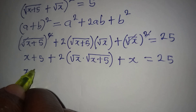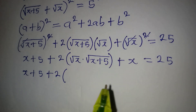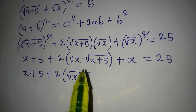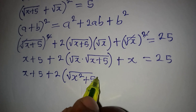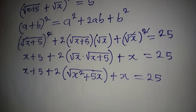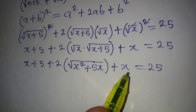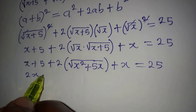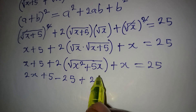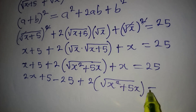Continuing from here: we have x plus 5, plus 2 times the square root of x multiplied by x plus 5 — expanding that gives x squared and plus 5x inside the radical. Collecting like terms: x plus x gives 2x, plus 5 minus 25, plus 2 times square root of (x² + 5x), equals 0.